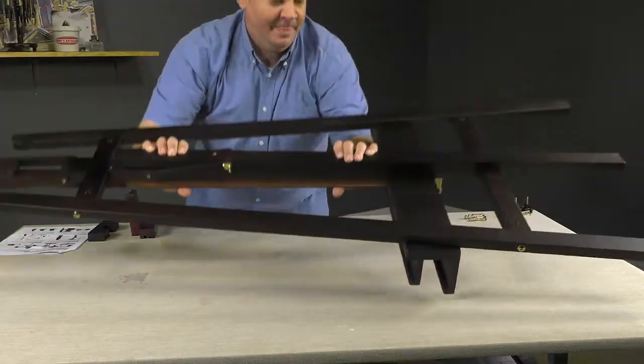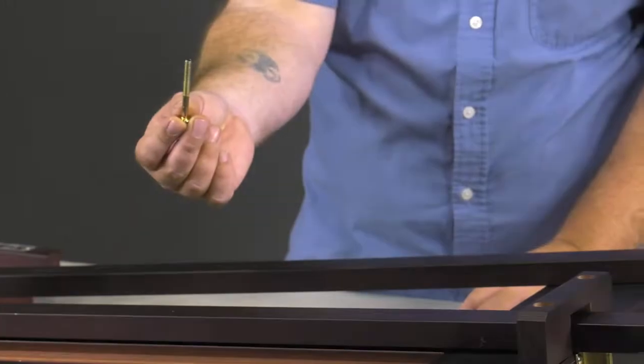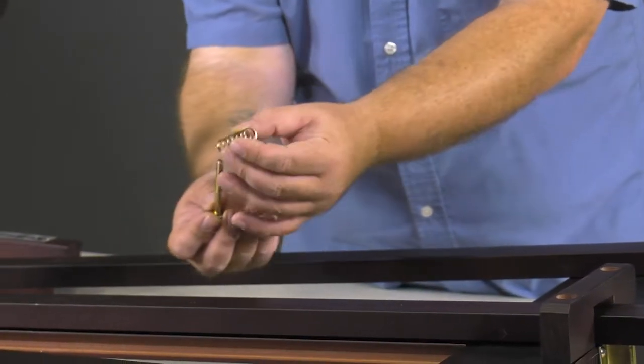Turn the easel upside down, then slide the springs onto the 2-inch bolts, D. These go into the U support bar, L.